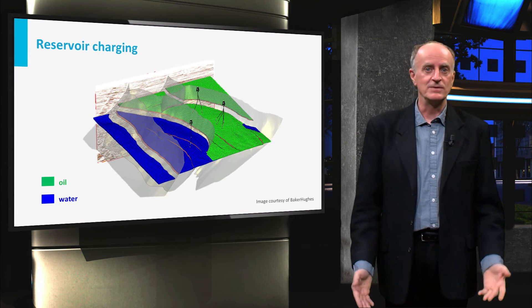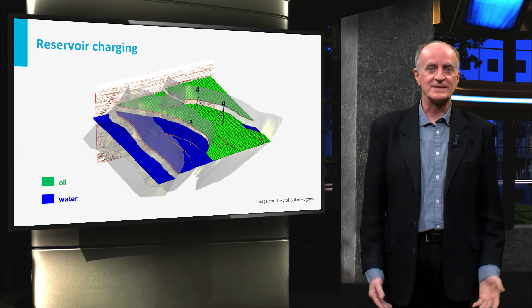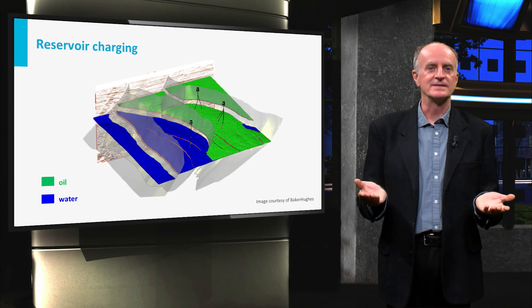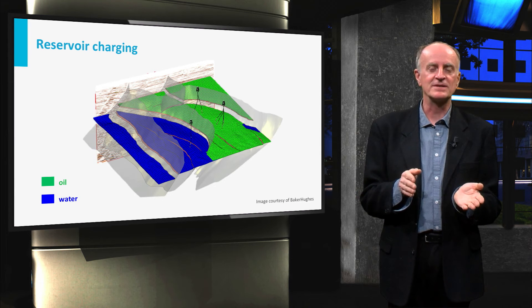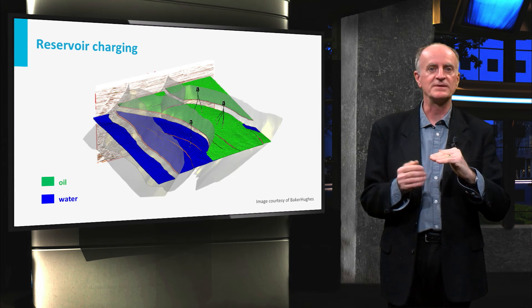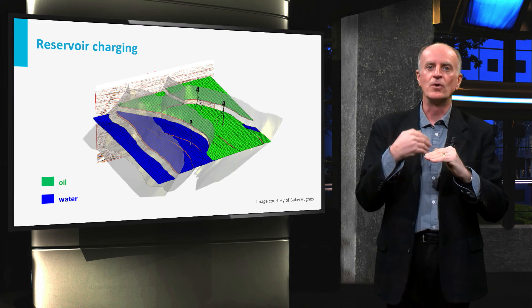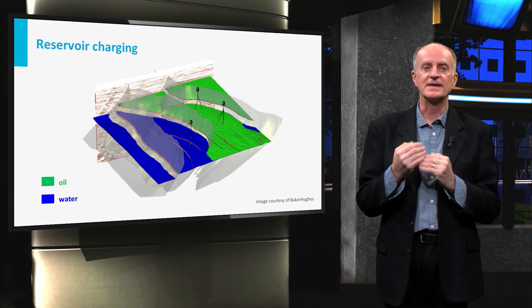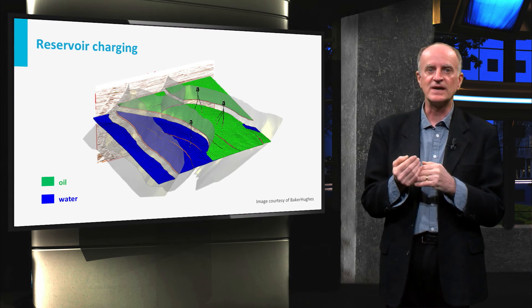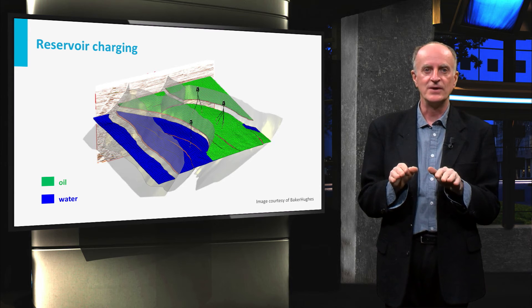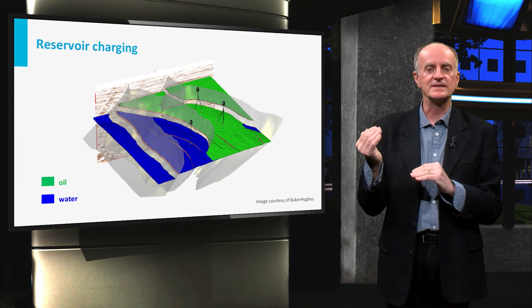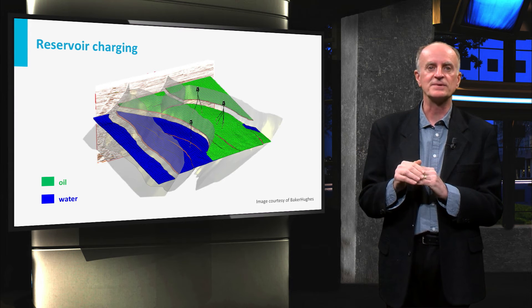Until now, the team has defined the properties of the reservoir, but what is inside it? One of the key parameters is the position of the contact between the water below and the oil or gas above. In the case shown in the slide, the reservoir on the left side of the picture is filled with water. Oil is only present in the central portions, indicated with the green colors.